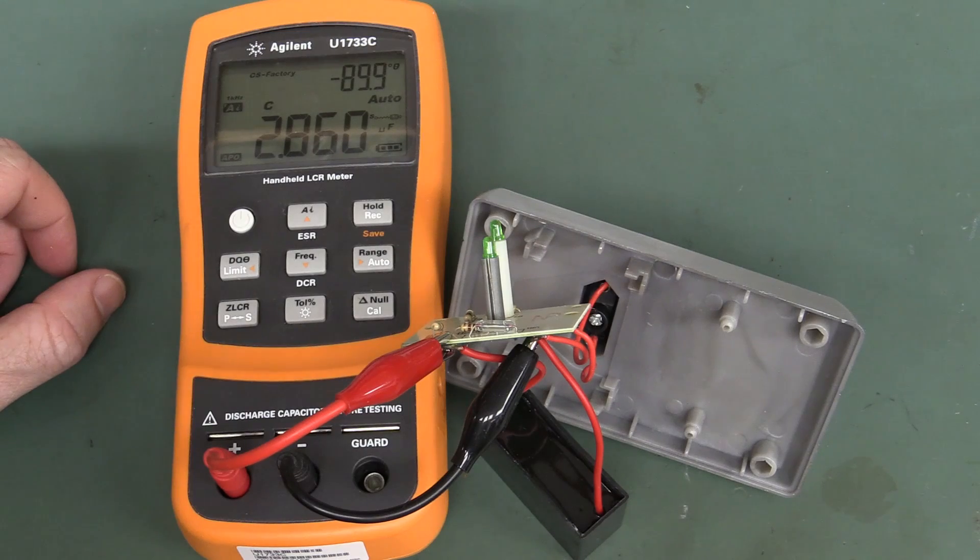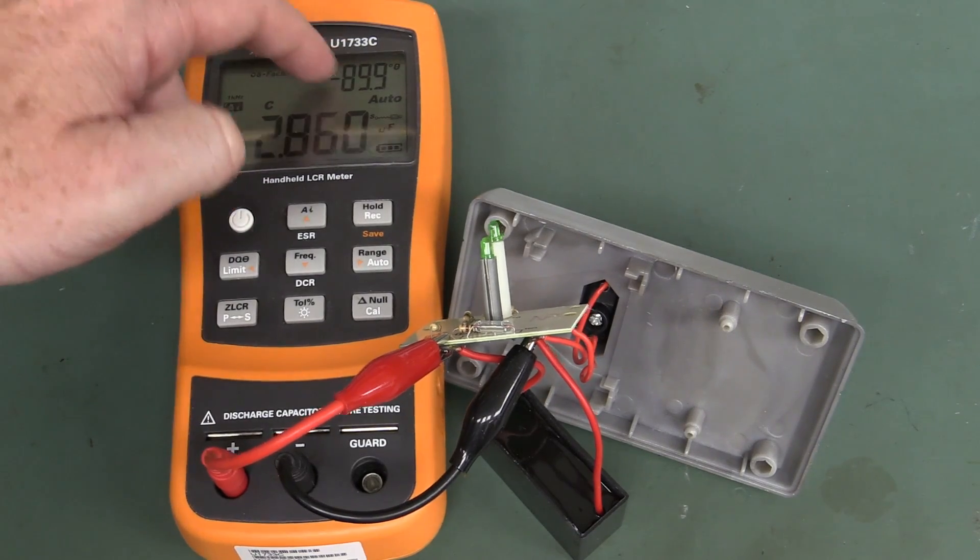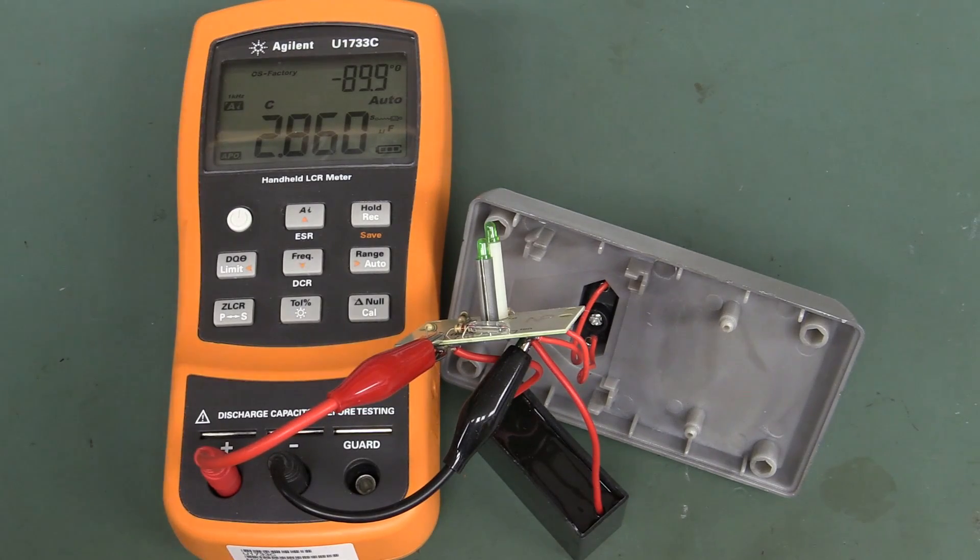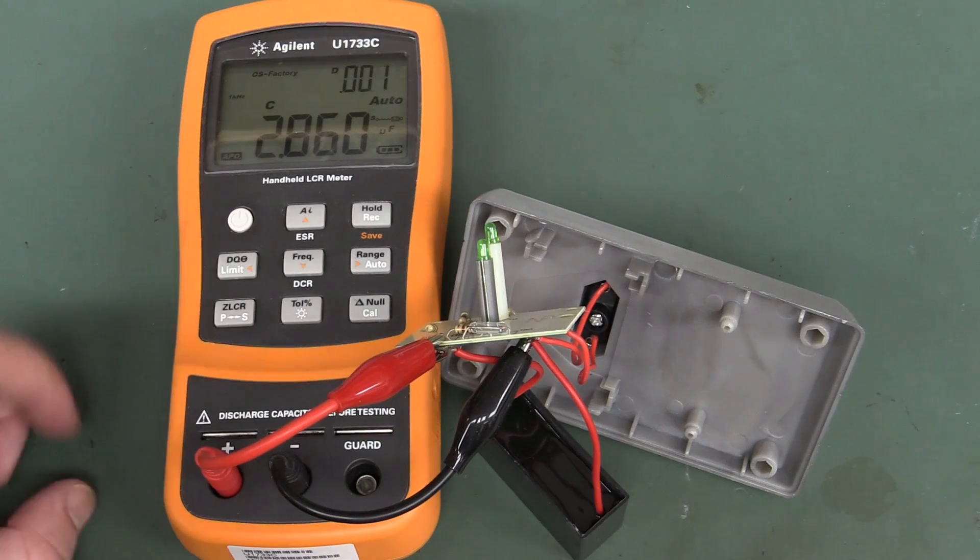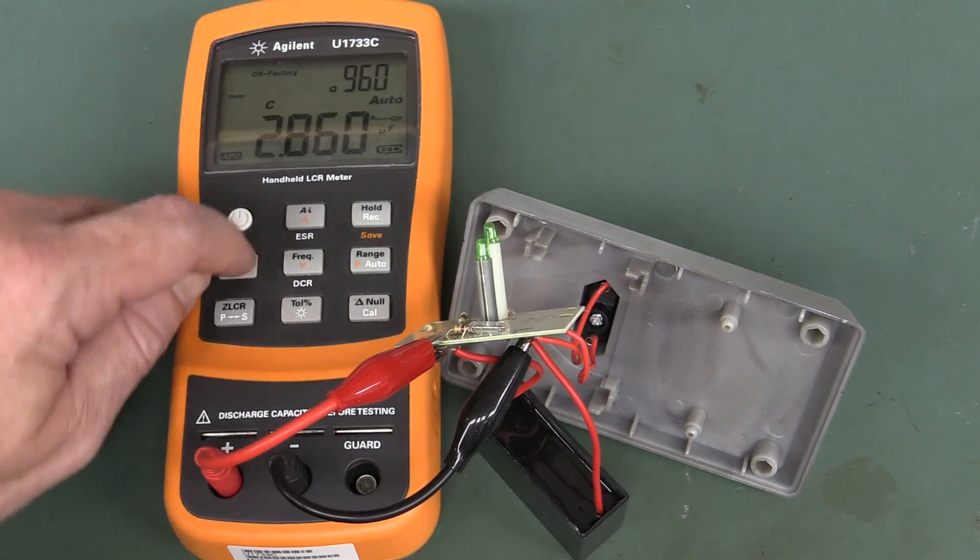Let's see if we can measure it. Yep, it's a capacitor. Look, 2.86 microfarads at minus 90 degrees, so it's almost perfectly a capacitor. So there you go, dissipation factor 0.001, as good as you get. It's a bloody cap.